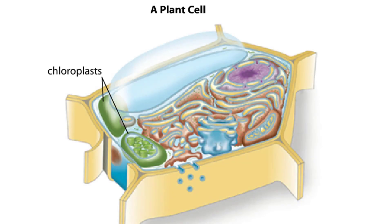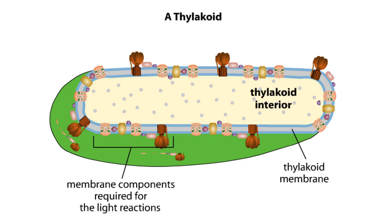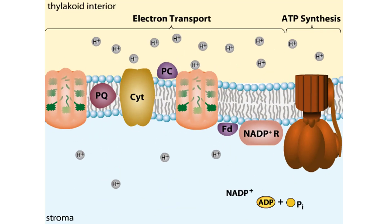Every chloroplast in a plant cell is packed with stacks of flattened sacs called thylakoids. The thylakoid membranes contain chlorophyll as well as most of the other components required for the light reactions of photosynthesis. The chlorophyll-containing structures within the membranes are called photosystems 1 and 2.